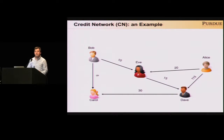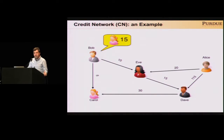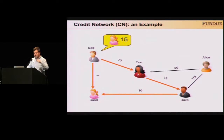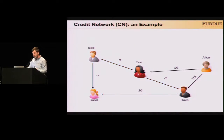A credit network thereby formed can be used to perform payments or to pay for services. For example, imagine that Bob wants to pay for a service to Karu worth $15. In order to perform such a payment, we need to find paths from Bob to Karu with enough credit. And once we find such paths, we decrease the credit along the paths one by one in order to perform the transaction. Once the credit is decreased, the payment is settled.